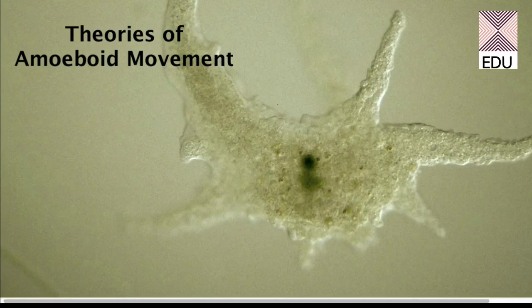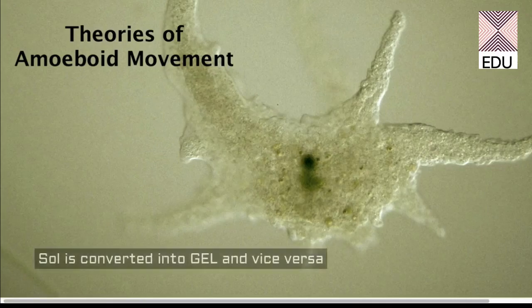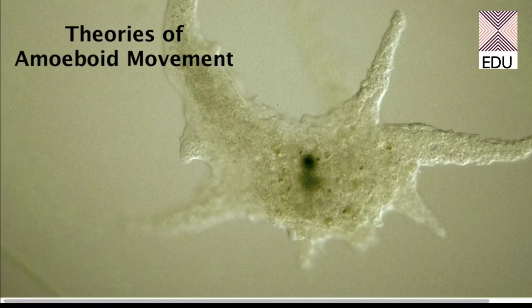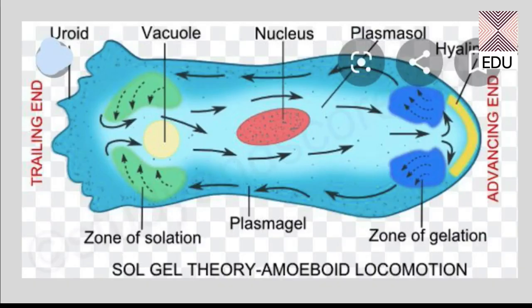The most important and currently accepted theory is the sol-gel transformation theory, advocated by Yagi in 1961 and Marshland in 1964. This theory explains amoeboid movement as a reversible transformation of sol and gel in the body of the amoeba. This is the main accepted explanation for amoeboid movement.